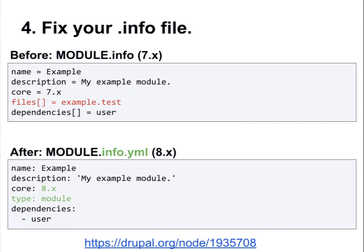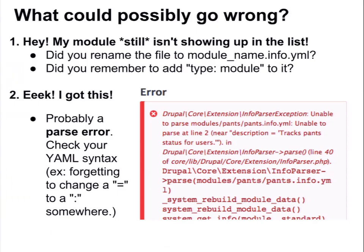You don't need that files line anymore because we now use a standard autoloading procedure, not that custom registry table stuff. Alex will get a lot more into that. And you have to rename your file from .info to .info.yaml. You could get a problem where your module still isn't showing up — usually that's because you forgot to rename the file. I've done that 1,500 times. There's also a new key called 'type: module' and you have to add that in. If you don't add that, it won't show up either.